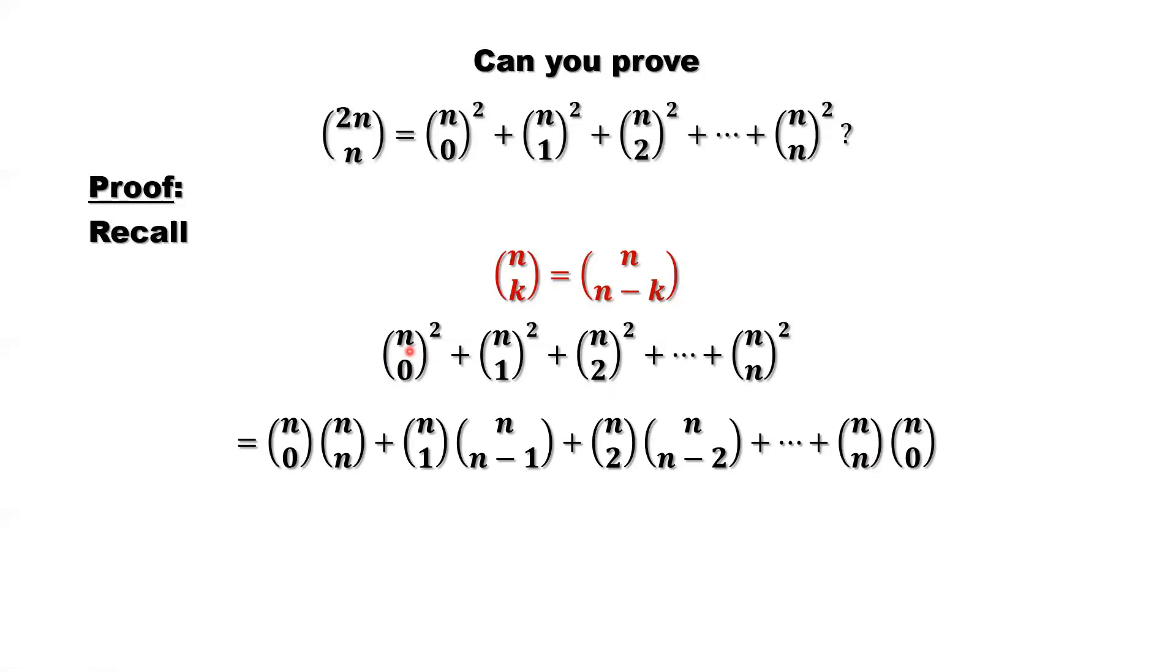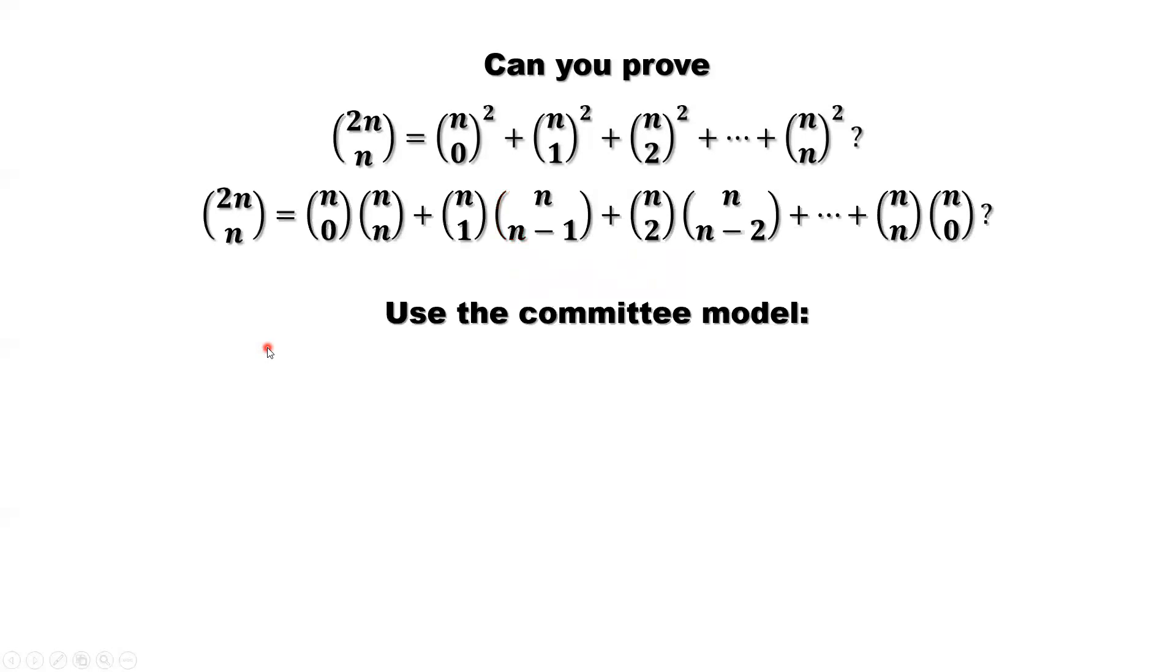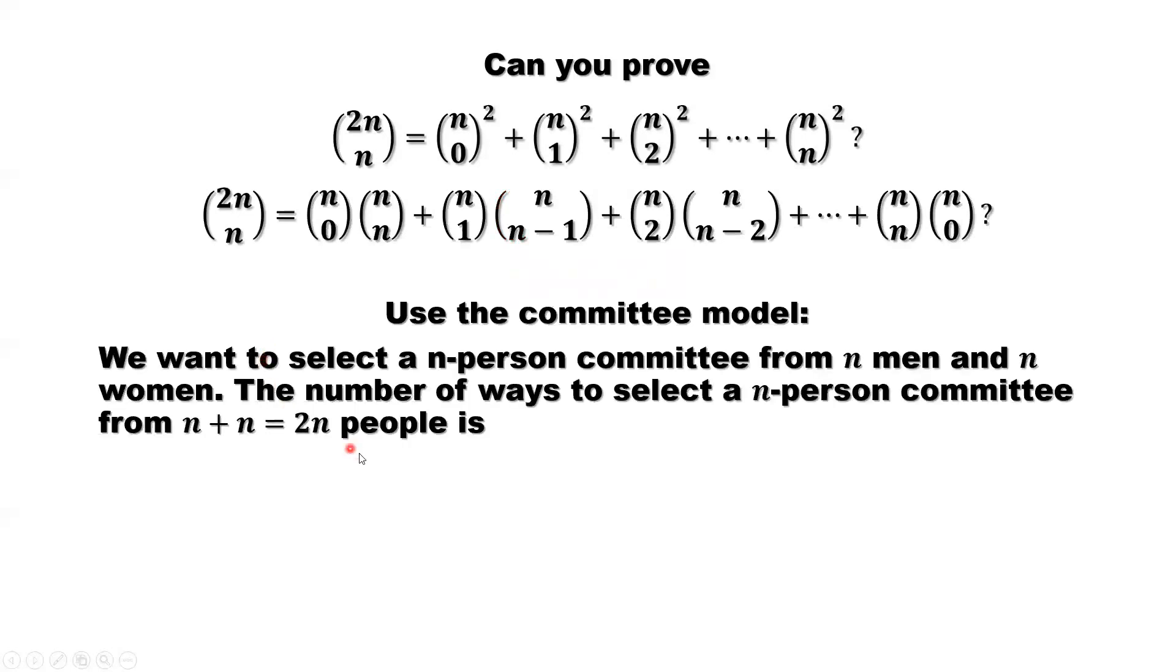We are going to use the committee story model to form this part. Let's look at the model. This is the committee model: we want to select an n-person committee from n men and n women. The number of ways to select an n-person committee from the total n plus n, 2n people, is from 2n choose n. That's the left-hand side.